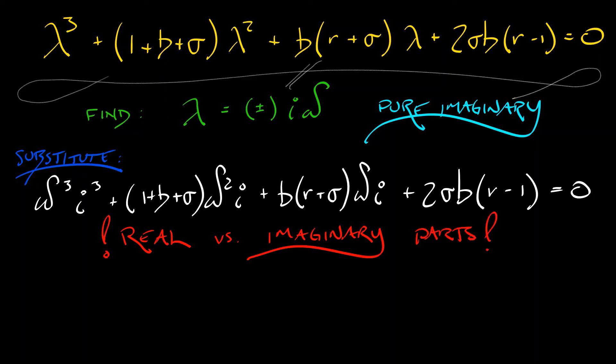The real part of this involves the quadratic term and the constant term, and it gives us quantity one plus b plus sigma times omega squared equals two sigma b times quantity r minus one. Solving this for omega squared gives us two sigma b times quantity r minus one, all divided by one plus b plus sigma. Wait, we still have the imaginary parts to deal with.